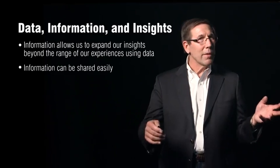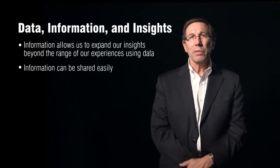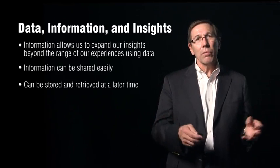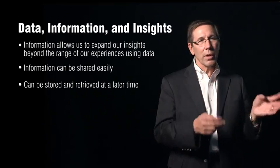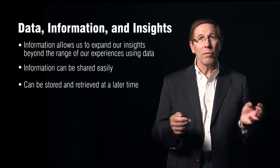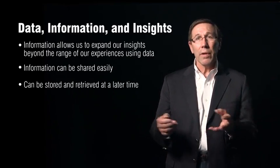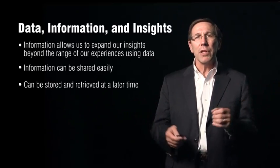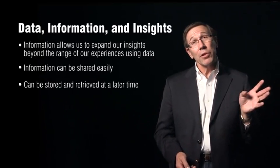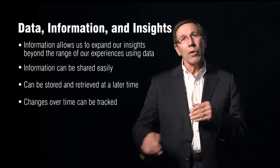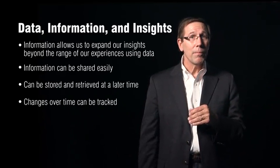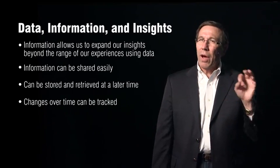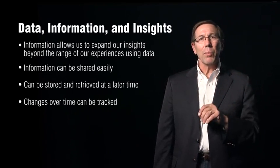Information can be shared — that's one of the key aspects of information. A satellite image is stored digitally; we can put it on hard drives, a portable device, the internet, or a network. That allows us to share information easily. The other thing information does is allow us to store it so we can look at changes over time. Importantly, we're not actually seeing the object — it is a representation.